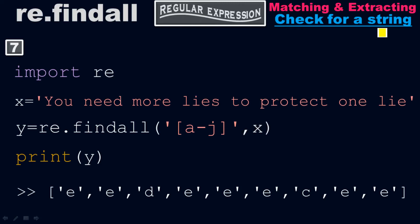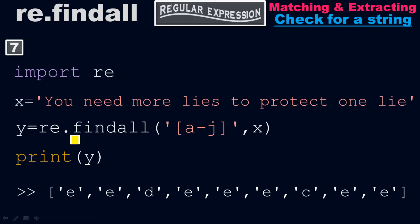We are only checking for a string here — no concern with digits. First import the re library in Python, where r stands for regular and e stands for expression. Then x equals 'you need more lies to protect one lie'. This information is saved with the name x. Then y equals re.findall([a-j], x) — this x refers to that x value.